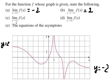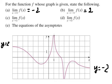When x approaches one — here is about x equals one — as x goes close to one from this side, it goes to positive infinity. And the last one goes to negative infinity.